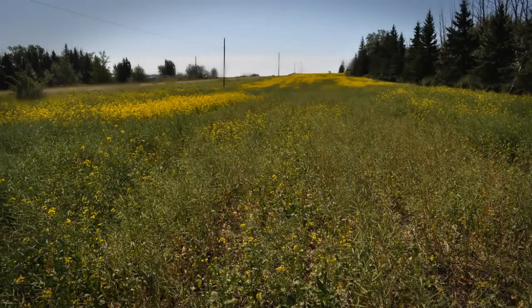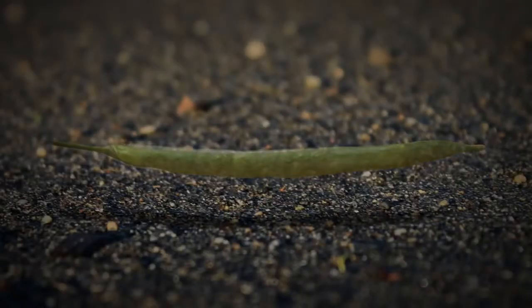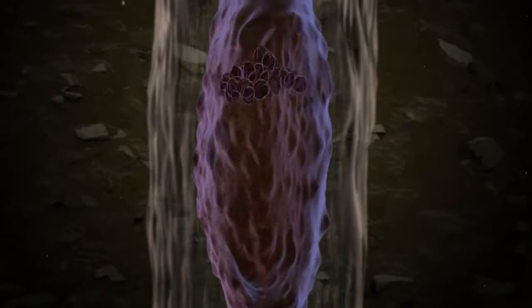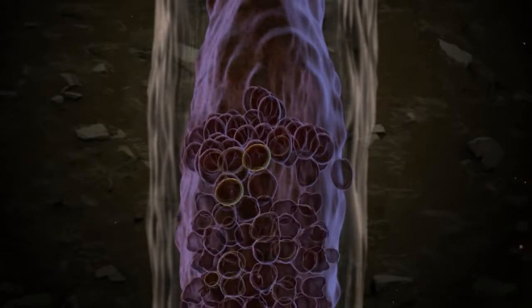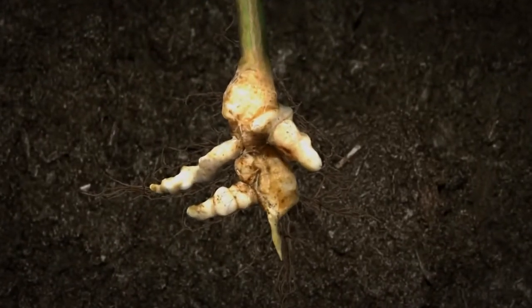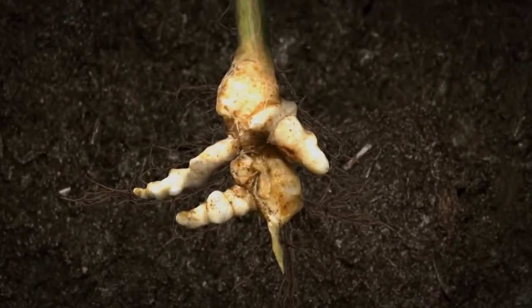The earlier the infection and the greater the number of secondary zoospores, the greater the yield loss. The plasmodia also alter hormone balances within the root. The plant interprets this as a signal to grow more root tissue, which it does in abundance. This is how the clubbed roots form.